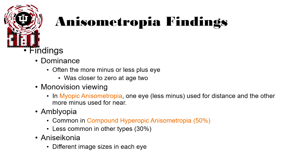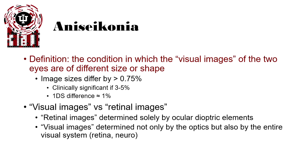Ultimately, anisoconia — which is causing many of these symptoms — is due to the different image sizes in each eye. A simple definition: anisoconia is the condition in which the visual images of the two eyes are of different size or shape. Image sizes differing by greater than 0.75% are not a problem, but become clinically significant if the difference reaches 3% to 5%. Typically, about one diopter will cause about a 1% difference in image size.